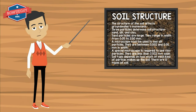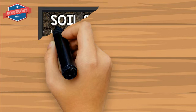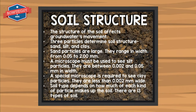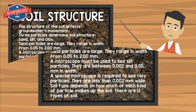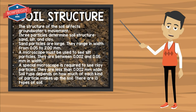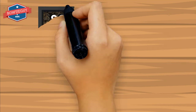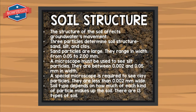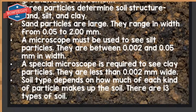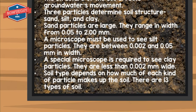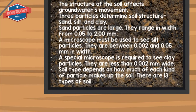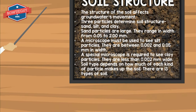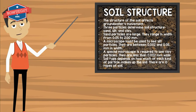Now let's discuss soil structure. The structure of the soil affects groundwater's movement. Three particles determine soil structure: sand, silt, and clay. Sand particles are large — they range in width from five one-hundredths to two millimeters. A microscope must be used to see silt particles; they are between two-thousandths and five-hundredths of a millimeter in width. A special microscope is required to see clay particles; they are less than two-thousandths of a millimeter wide. Soil type depends on how much of each kind of particle makes up the soil. There are 13 different kinds of soil.